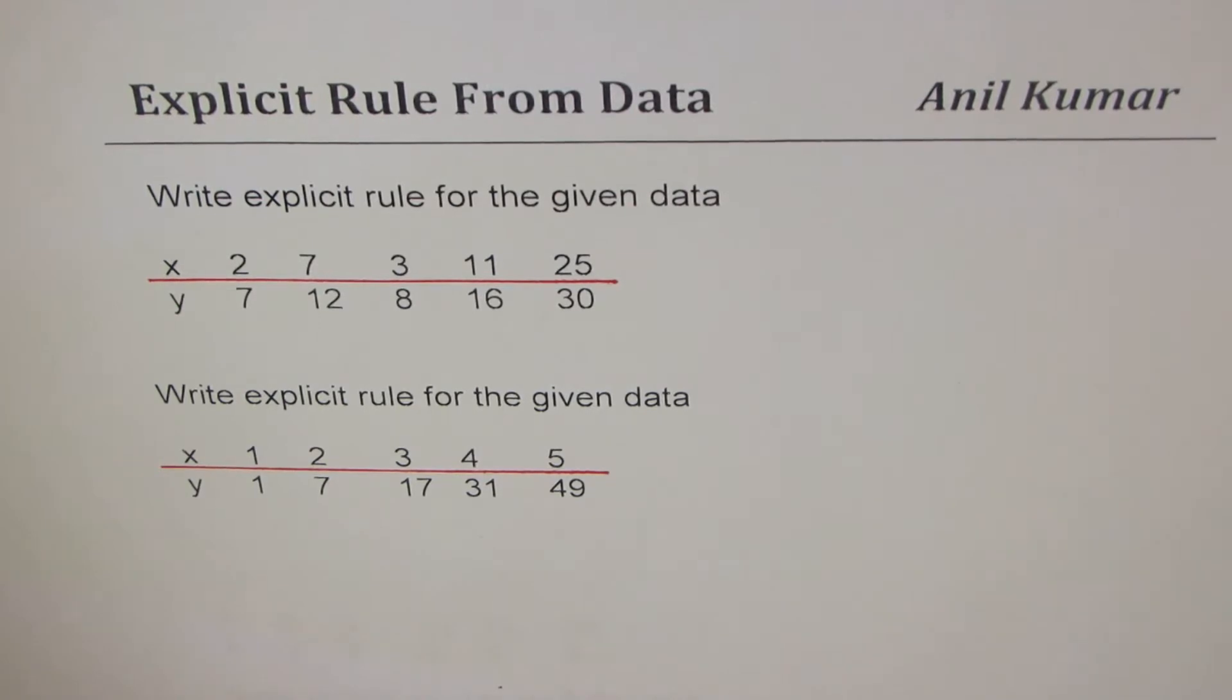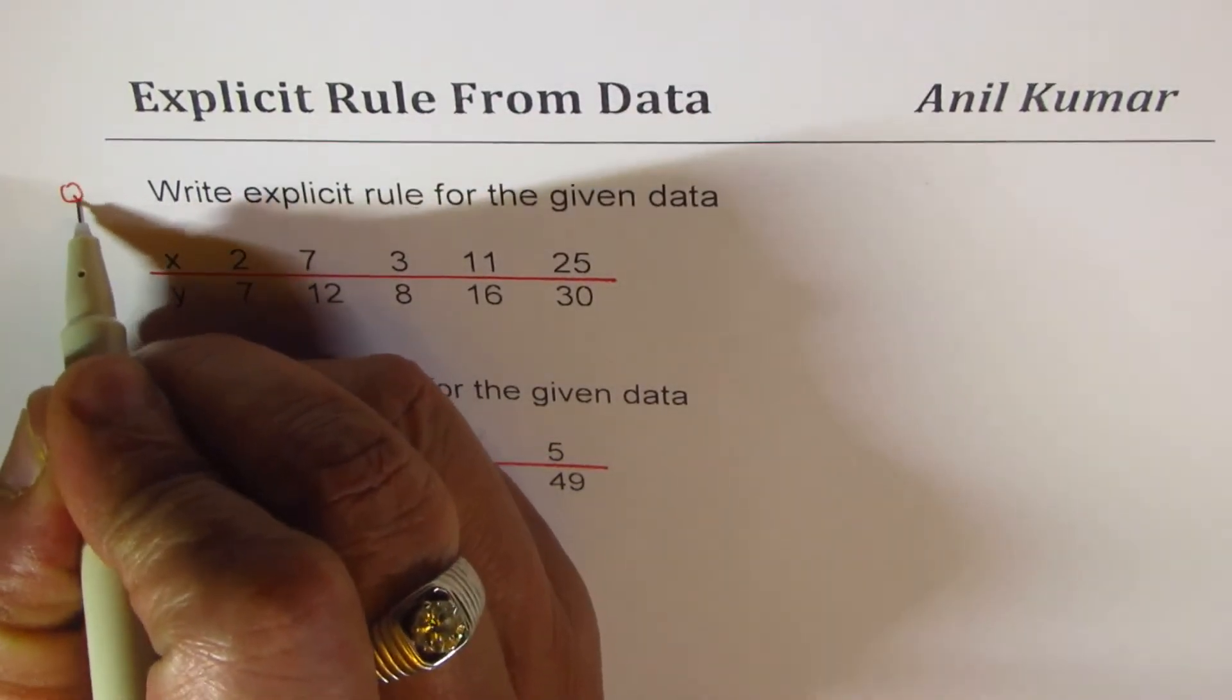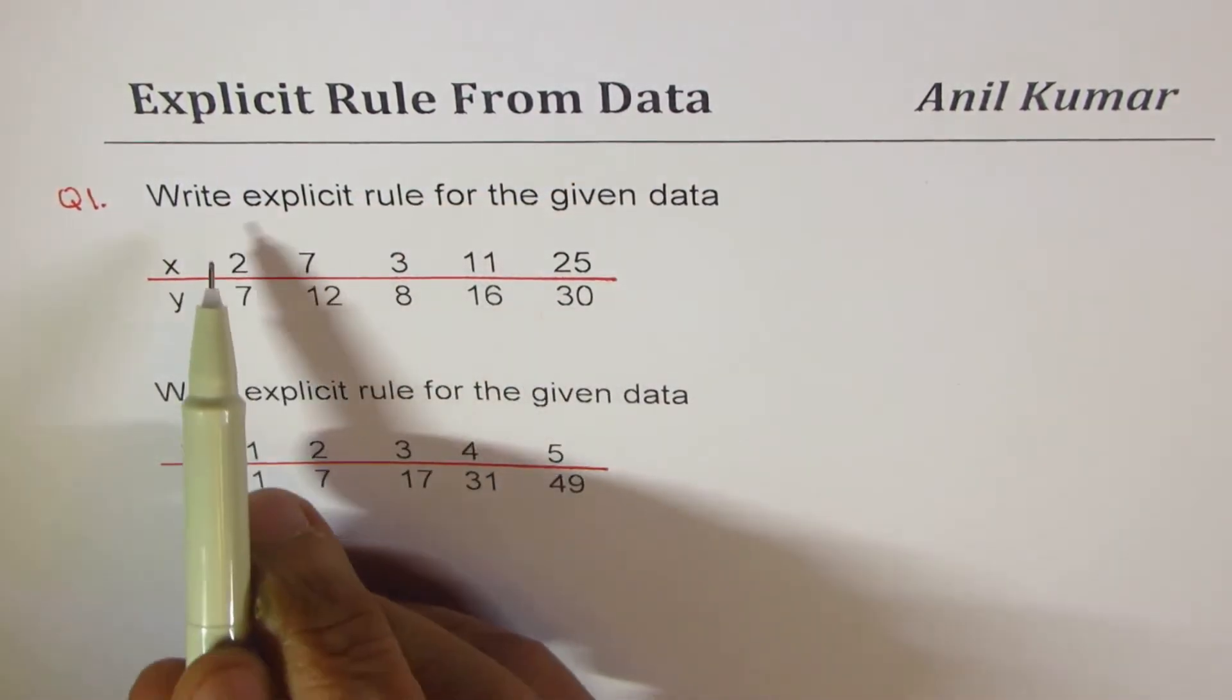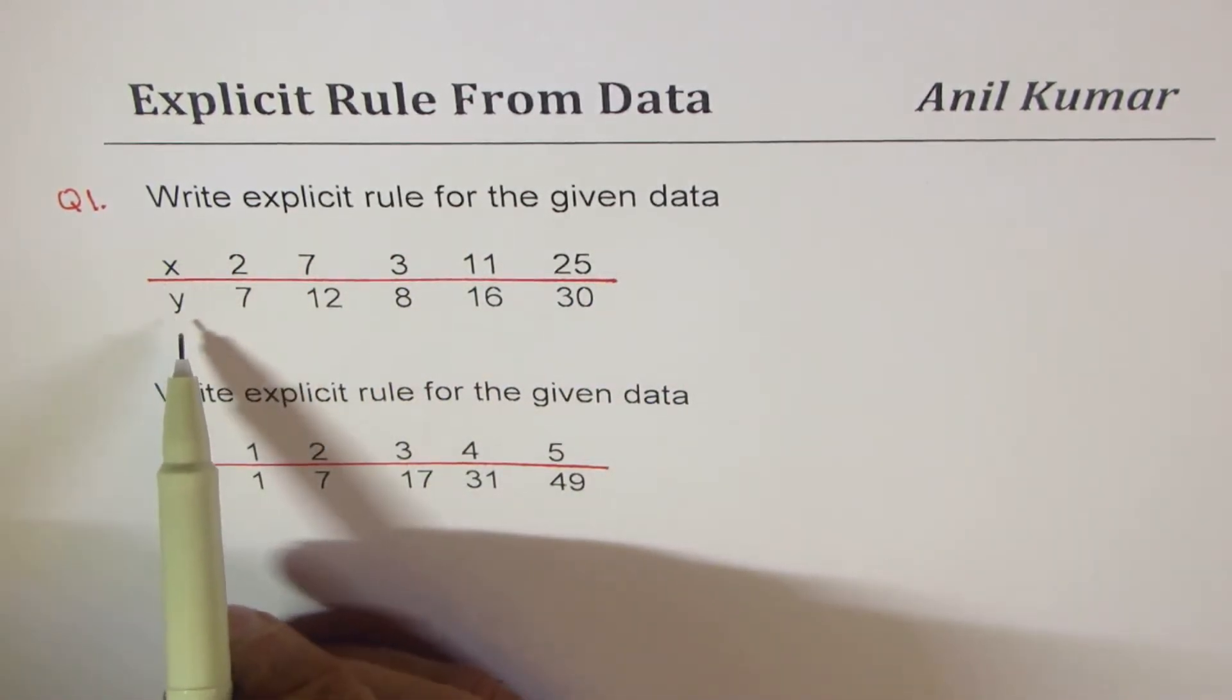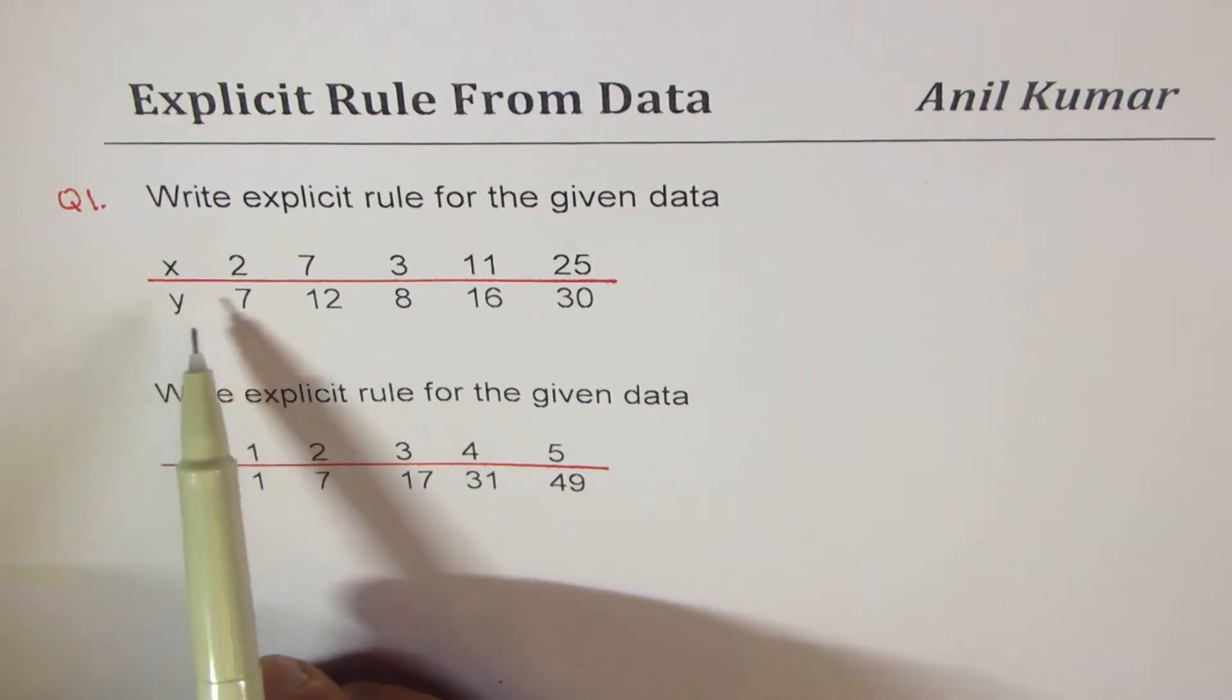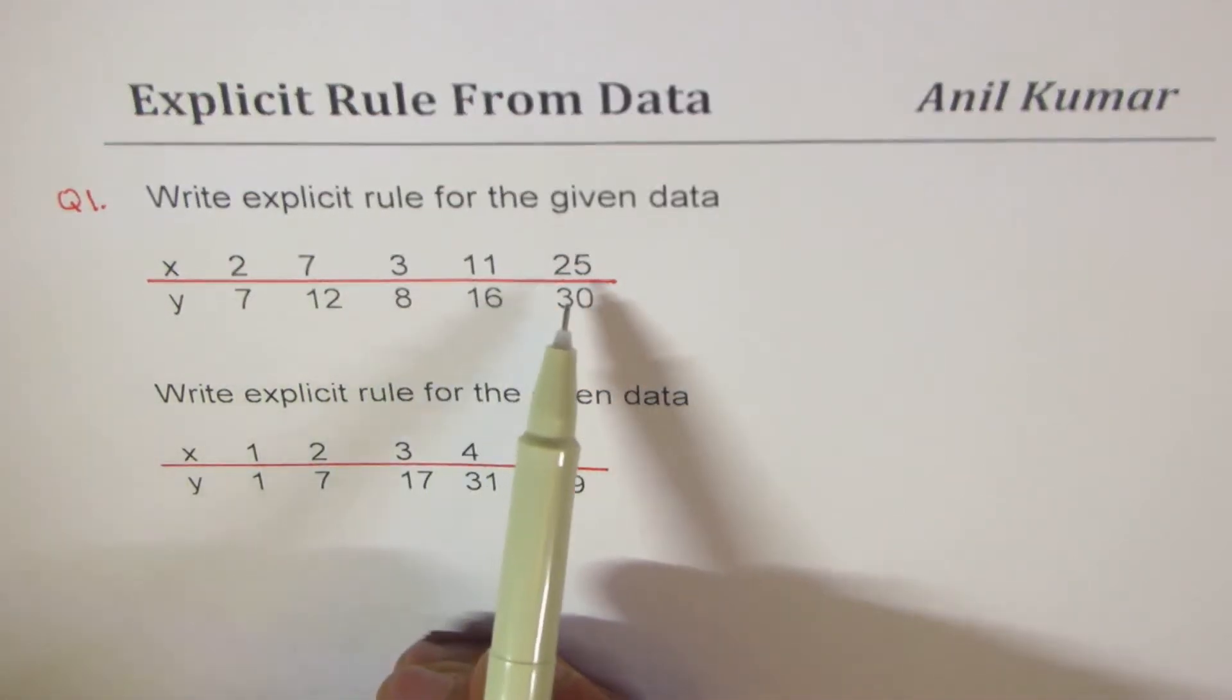We have two questions here, so let me write this as question number one: find explicit rule for the given data. X and Y values are given when x is 2, 7, 3, 11, 25.